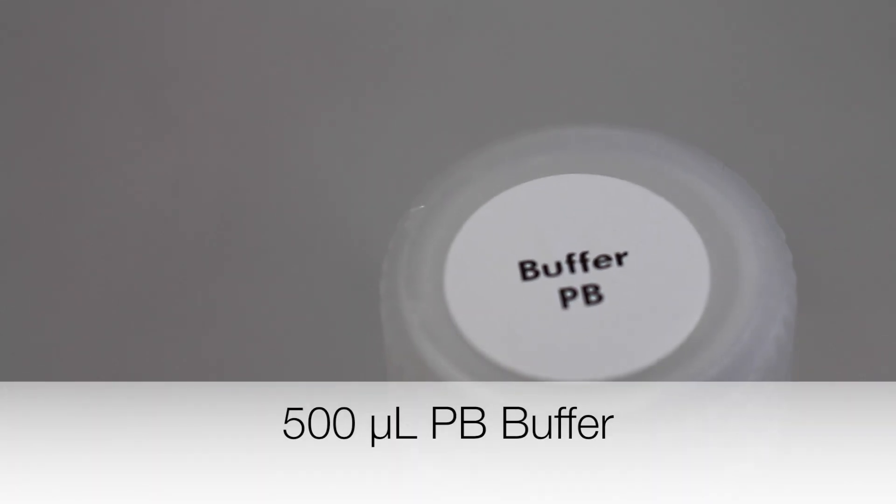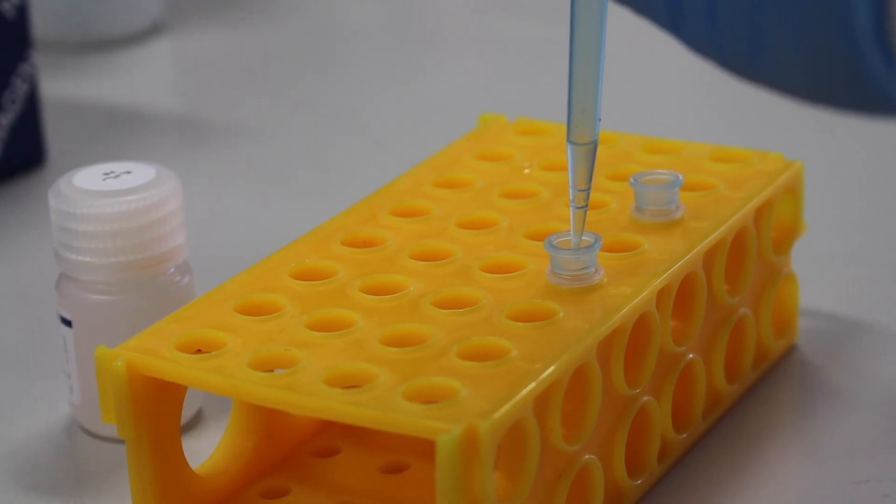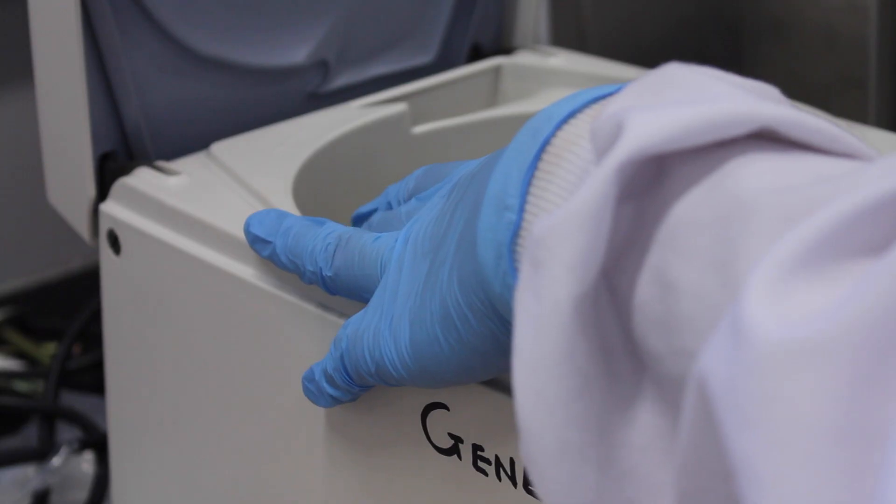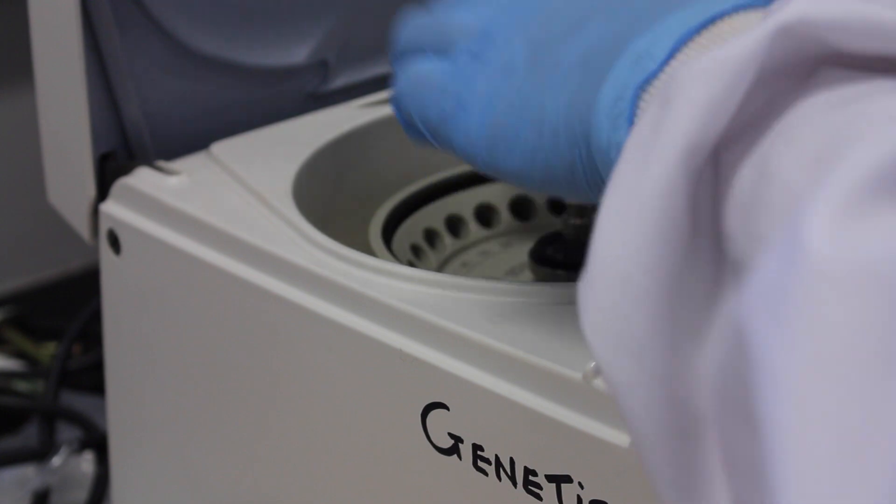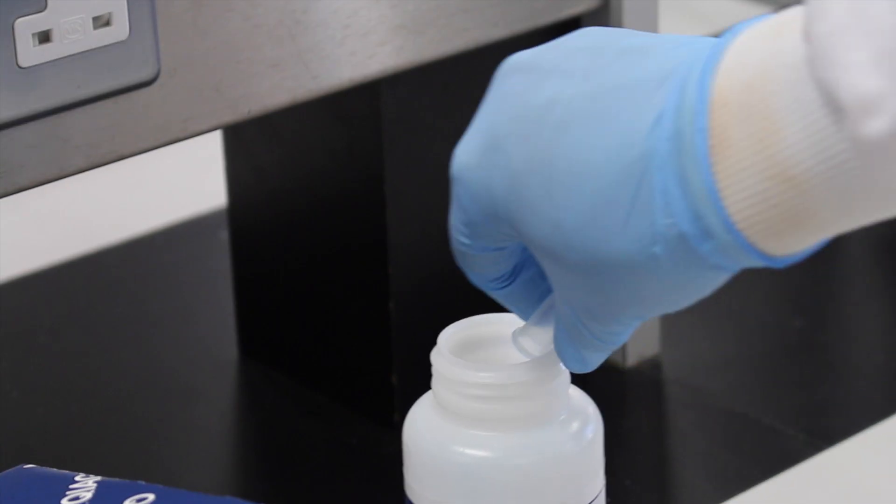500 microliters of buffer PB is then pipetted into the spin column. This step is necessary to remove trace nuclease activity when using endonuclease A positive strains and is not required for strains such as XL1-Blue and DH5 alpha. The columns are centrifuged at top speed for 1 minute. The flow through is discarded.